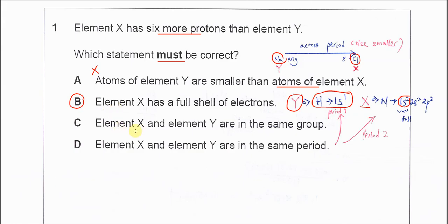Why C cannot? Elements X and Y are in the same group. We know that the difference is six protons. The difference is too less. So they cannot be the same group, much more than that.